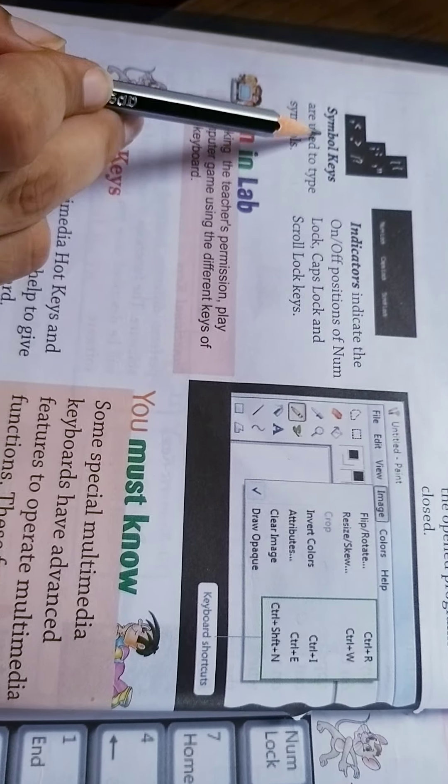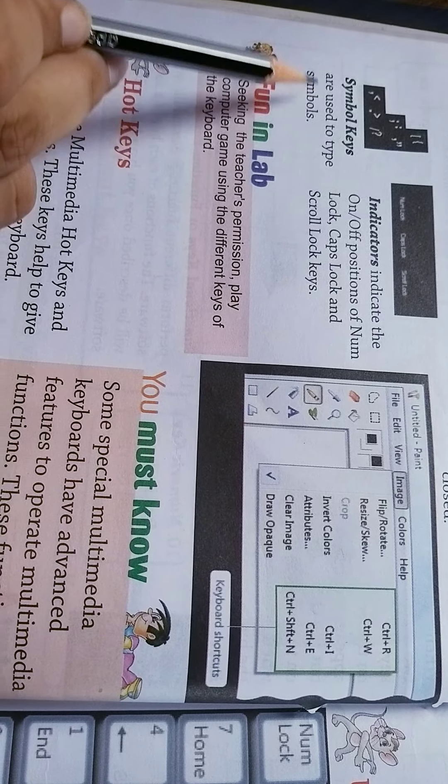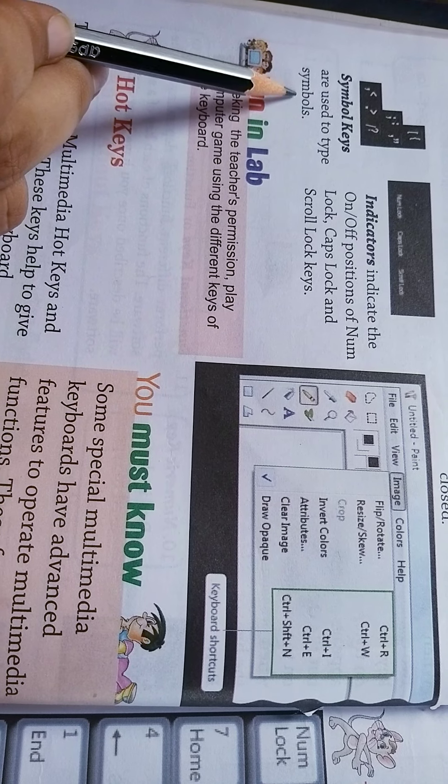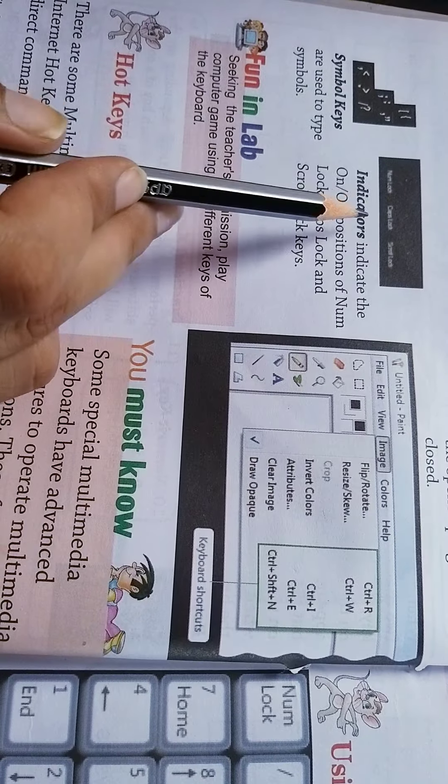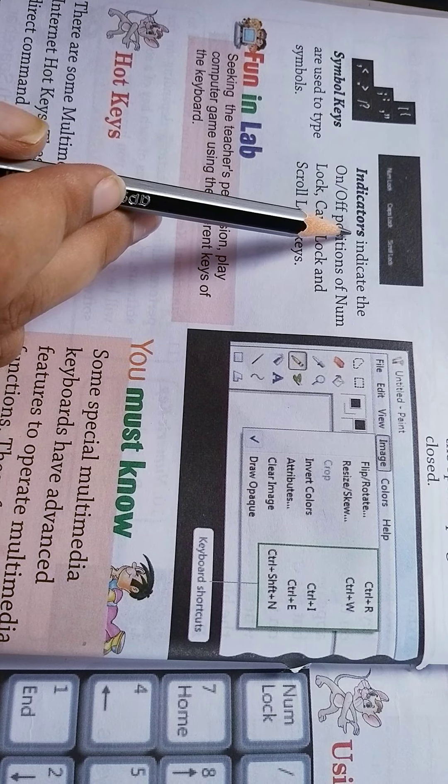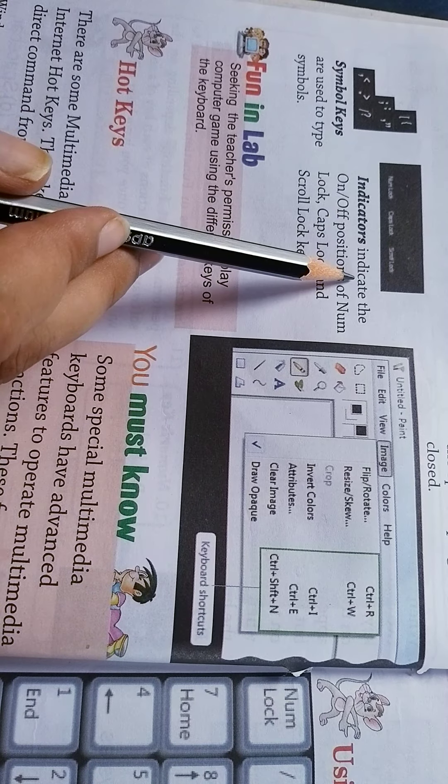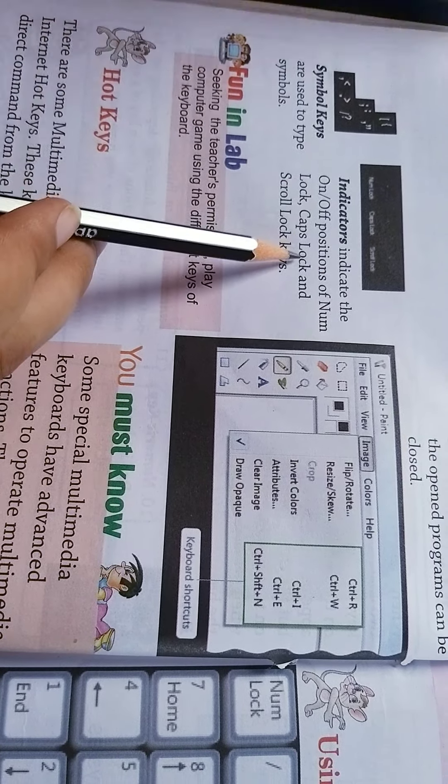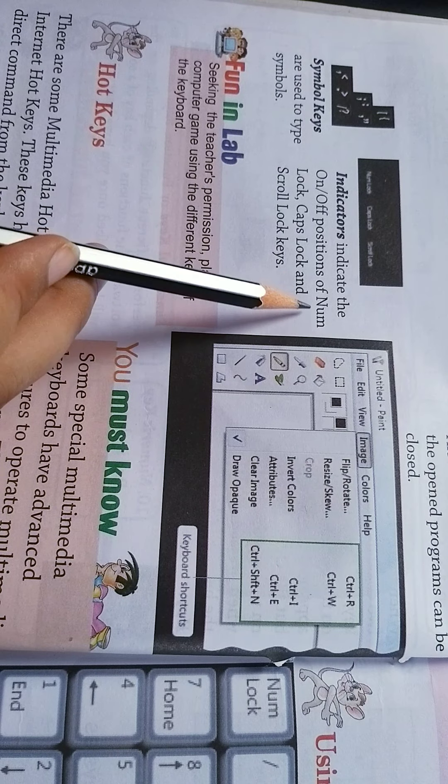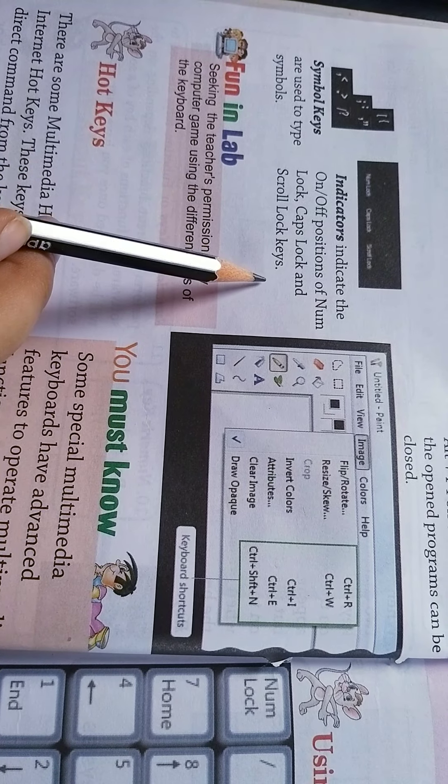Next are Symbol keys. Symbol keys are used to type symbols. Here are the pictures of symbols. Next are Indicators. Indicators indicate the on or off positions of num lock, caps lock, and scroll lock keys.